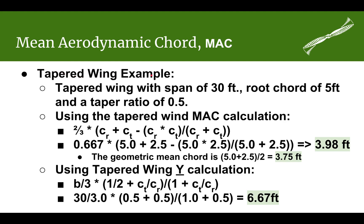Let's do a simple tapered wing example with a straight leading edge tip to tip. Say we have a 30-foot wing, a root chord of five feet, and a taper ratio of one half — so the tip chord is two and a half feet. Plugging into the equation, the mean aerodynamic chord works out to roughly four feet. The geometric chord is 3.75 feet, so the MAC is always going to be a little bit longer than the geometric average on a tapered wing.